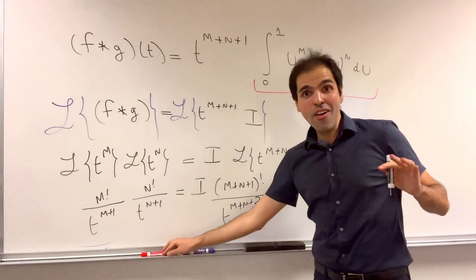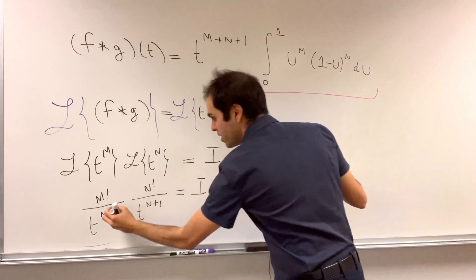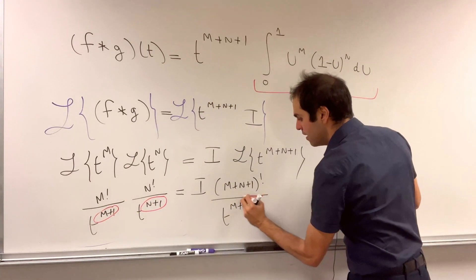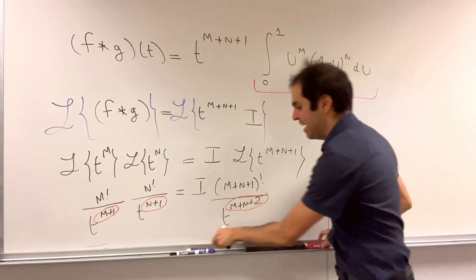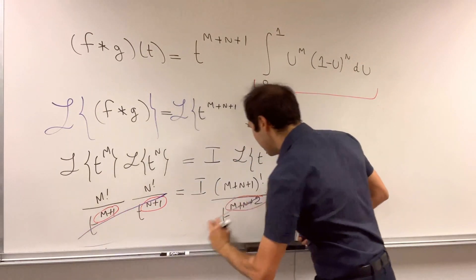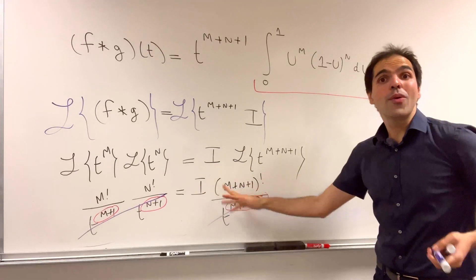And now comes a really, really cool thing. Notice the powers here, m plus 1 plus n plus 1, precisely match. Meaning that you can just cancel out now the denominator,